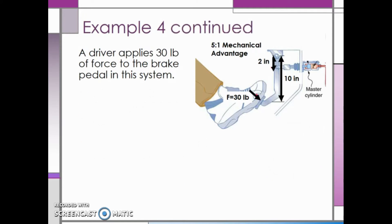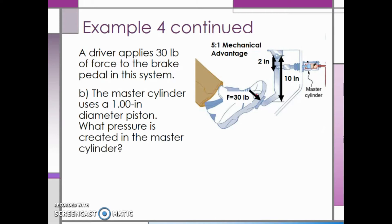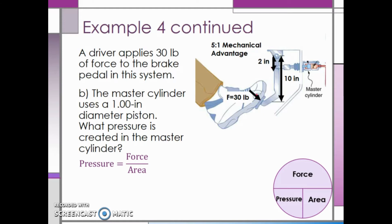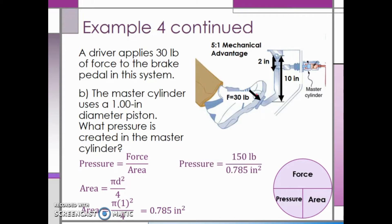Continuing to the next part, the master cylinder uses a 1 inch diameter piston. What pressure is created in the master cylinder? To find the pressure, we take the force divided by the area. However, we aren't specifically given the area, so we have to solve for it using the diameter. The area of a circle, or in this case the piston, is equal to pi multiplied by the diameter squared divided by 4. Substituting in the diameter of 1 inch, the area of the piston is 0.785 square inches. We can then find the pressure by taking the force of 150 pounds and dividing by 0.785 square inches, giving us a pressure of 191 pounds per square inch.